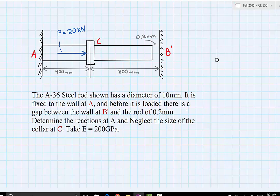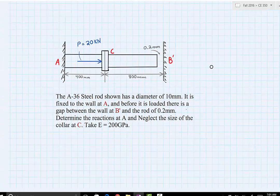We're given a modulus of elasticity of 200 gigapascals. We're given information stating that this rod is uniform all the way across, same material, same dimensions.